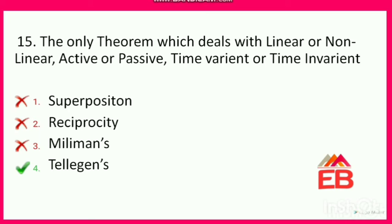Next: the only theorem which deals with linear or nonlinear, active or passive, time variant or time invariant networks — which theorem is it? Options are superposition, reciprocity, Millman's, or Tellegen's. The correct option is Tellegen's theorem — option 4. It is the only theorem that deals with all of these parameters.